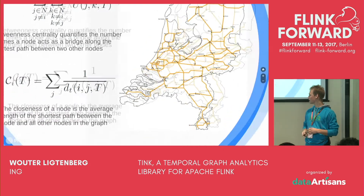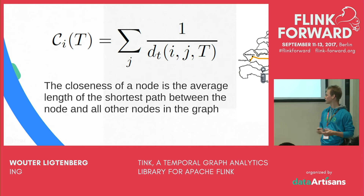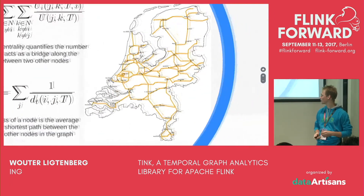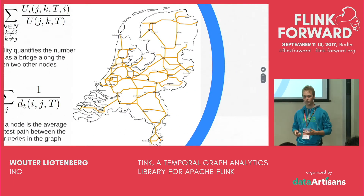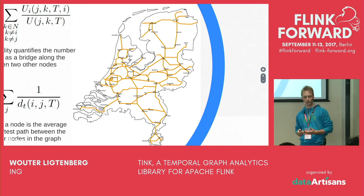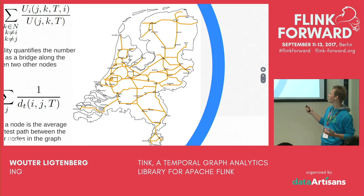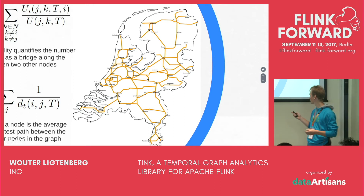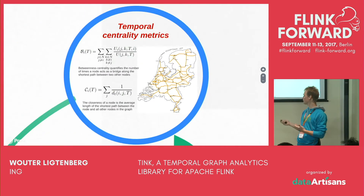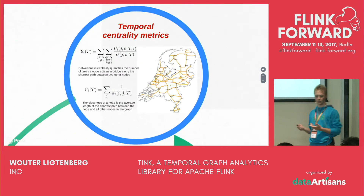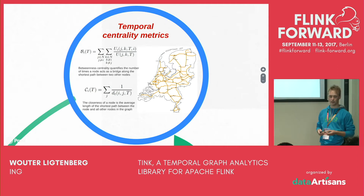Another centrality metric is closeness, which represents the average length of the shortest path between one node and all the other nodes in a graph. When we look at the real-world network, Utrecht Central Station also has a low closeness, which indicates its importance — from Utrecht Central you can get to almost anywhere with a low average amount of time. For this graph it may be straightforward, but this becomes more difficult when you have larger graphs which cannot be presented in a two-dimensional plane.